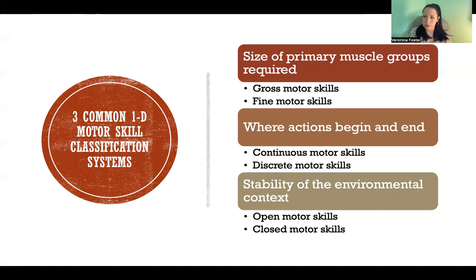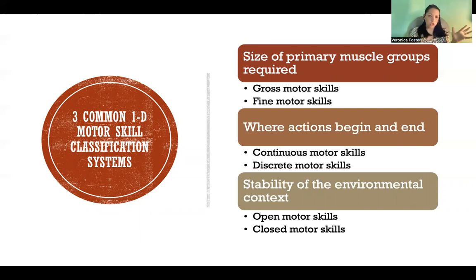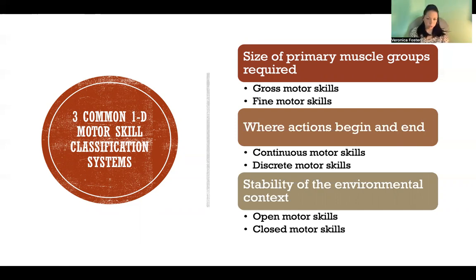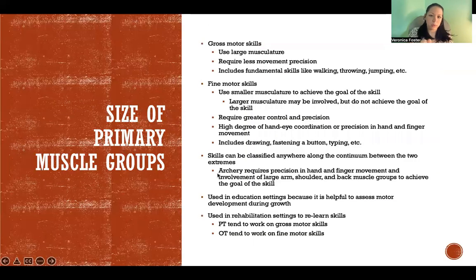The first classification is the size of the primary muscle groups required, where the extremes are gross motor skills with large muscle groups and fine motor skills with small muscle groups. The second is where actions begin and end, with the extremes being continuous and discrete. The third is the stability of the environmental context, with the extremes being open motor skills and closed motor skills. I'll go into each of those in more detail.